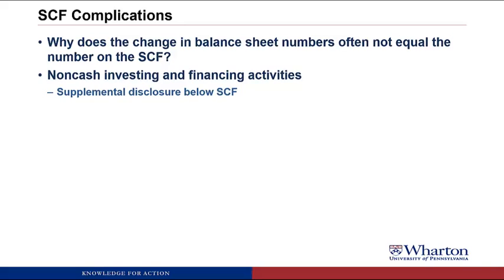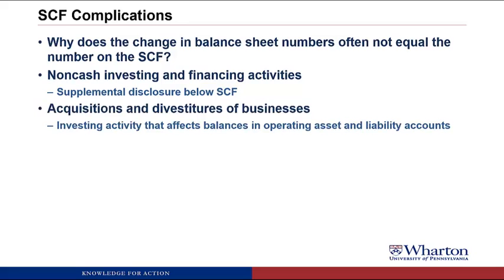First, there could be non-cash investing and financing activities that relate to the working capital accounts in the operating section. For example, a customer who owes us an account receivable can't pay cash, so instead they give us a piece of land — that's a non-cash transaction disclosed at the bottom of the cash flow statement. It would affect the balance sheet number for accounts receivable but wouldn't show up as operating cash flow. A more common example is acquisitions or divestitures. All cash paid to acquire another company is considered an investing cash flow, but part of what's acquired includes working capital assets and liabilities. Those accounts receivable would show up on the balance sheet but not in the operating section, because we want to classify that as investing and avoid double counting.